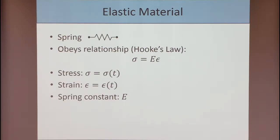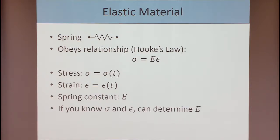First, let's talk about what it means to be elastic. An elastic material can be represented by a spring, and a spring obeys Hooke's law. Hooke's law divided by area gives us the relationship sigma equals E times epsilon, where sigma is the stress, epsilon is the strain, and E is the spring constant — typically an unknown parameter. If you knew your stress and your strain at some time instance, you could plug that into this equation and determine your spring constant.